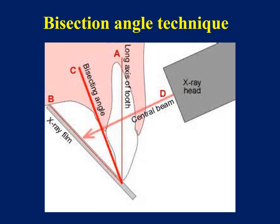The bisection angle technique. This X-ray technique depends on the bisecting angle between the tooth and the X-ray film. The X-ray beam will be 90 degrees on the bisecting angle.